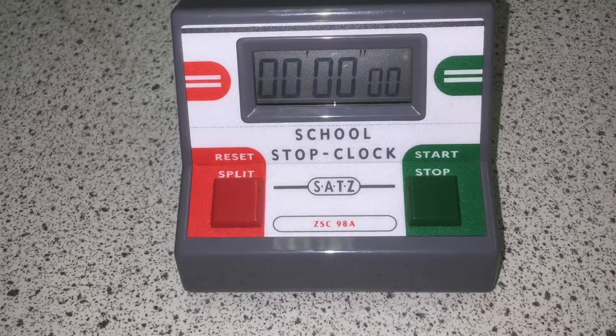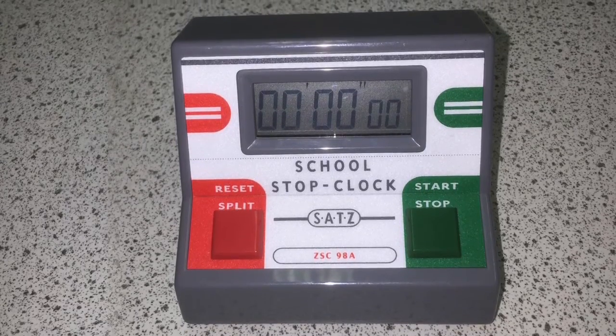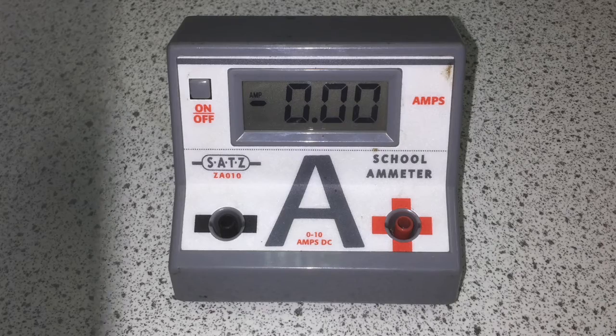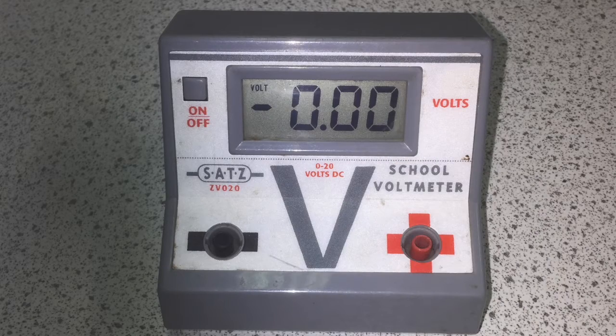A standard stopwatch to measure the time, an ammeter to measure the current - this is placed in series - and a voltmeter to measure the potential difference.